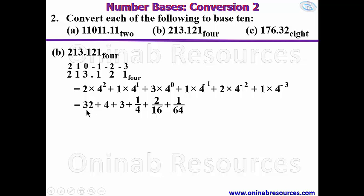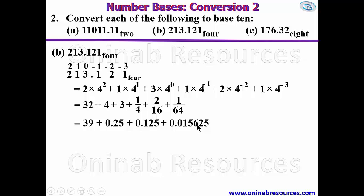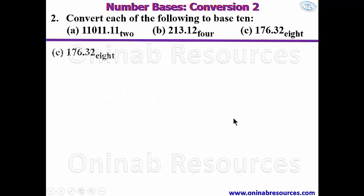Adding the whole number part: 32 plus 4 plus 3 is 39. For the fractional part: 1/4 is 0.25, 2/16 is 0.125, and 1/64 is 0.015625. Adding them together gives 0.390625. So the full answer is 39.390625. That's the end of problem 2b.